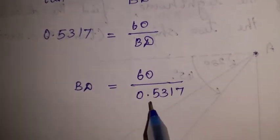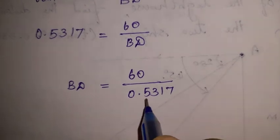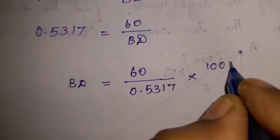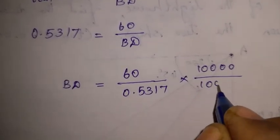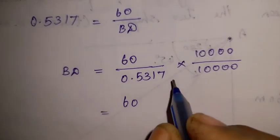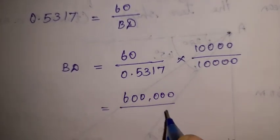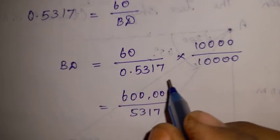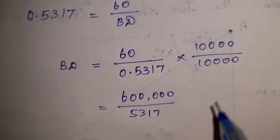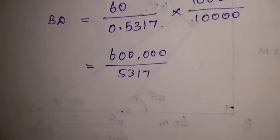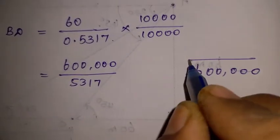To compute 60 divided by 0.5317: since 0.5317 has 4 decimal places, multiply numerator and denominator by 10,000. This gives 600,000 divided by 5317. Performing the division gives the value of BD. The distance between the two ships is BD minus BC — that is, subtract 60 from BD to get the distance between ship 1 and ship 2.